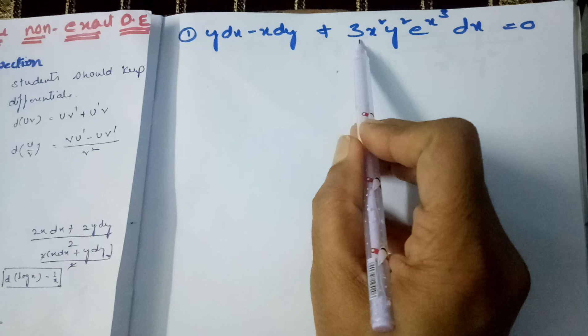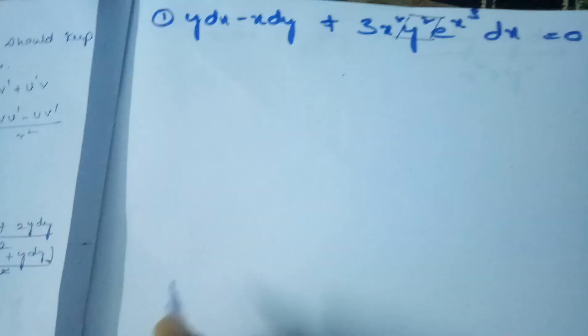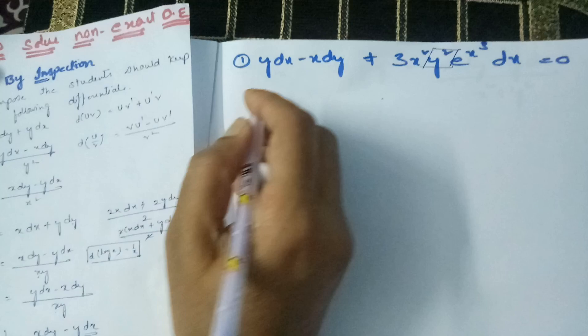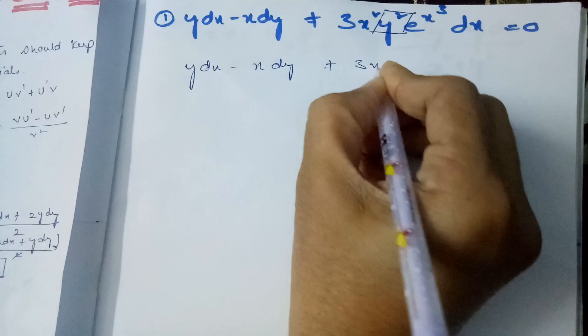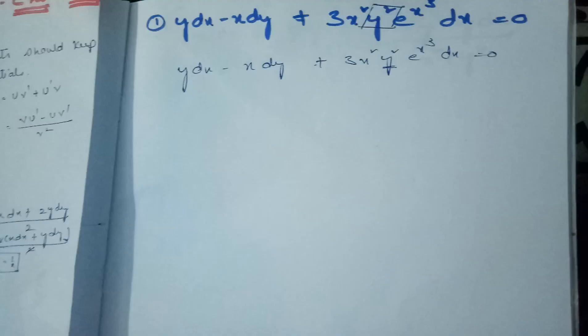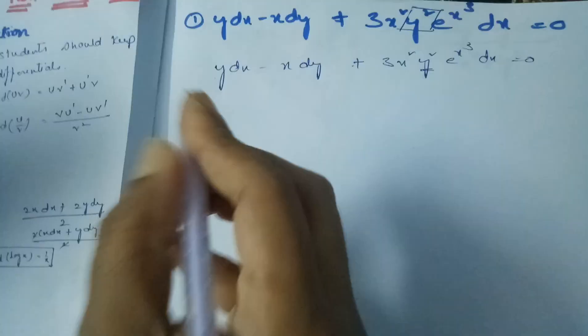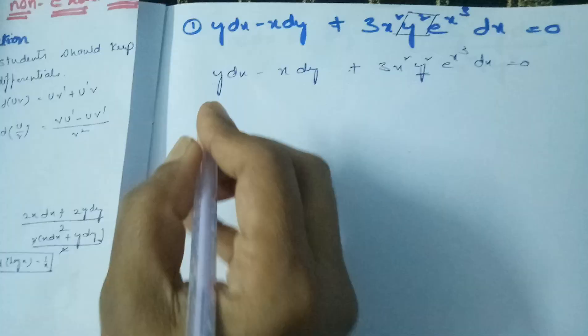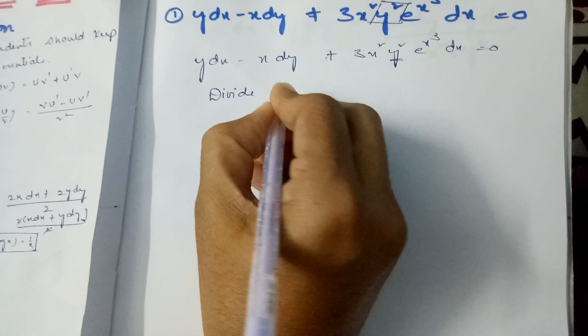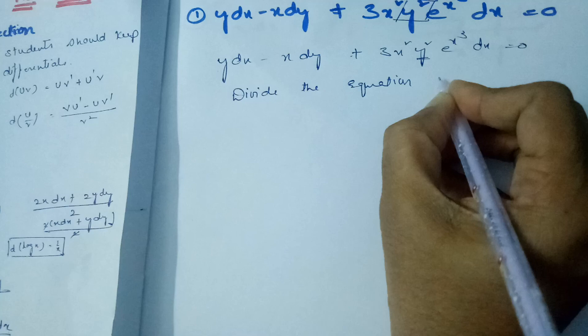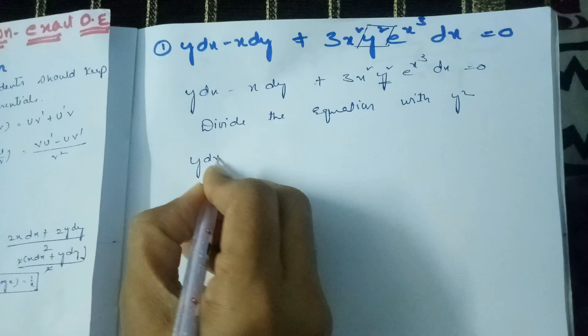If you watch carefully, x² is there, e^(x³) is there, and dx is there. So there is no need for the y² term to remain. We have the condition y dx minus x dy + 3x²y² · e^(x³) dx = 0. Since y² appears in between the x terms, to solve easily we divide the entire equation by y².